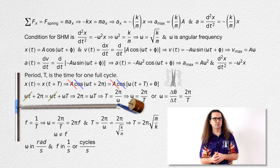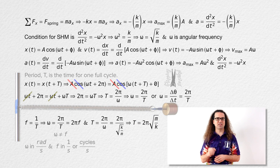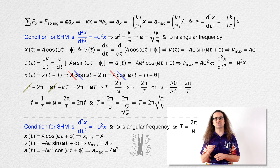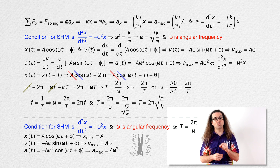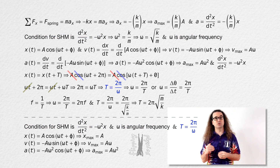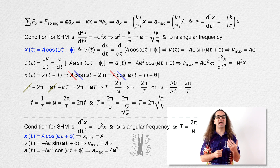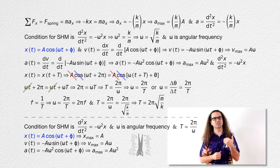The main takeaways from today's lesson are: the mathematical condition for simple harmonic motion is the second derivative of position with respect to time equals the negative of angular frequency squared times position. Period equals 2 pi over angular frequency. One position equation which satisfies the condition for simple harmonic motion is position equals amplitude times the cosine of the quantity angular frequency times time plus phase constant.